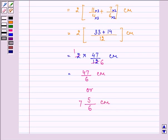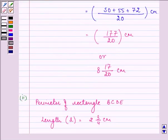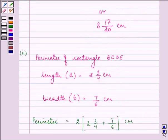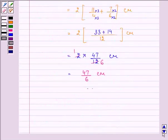Now thirdly, we need to answer whose perimeter is greater. We have the perimeter of the triangle as 8 and 17 by 20 and we have the perimeter of the rectangle as 7 and 5 by 6. So we need to compare.